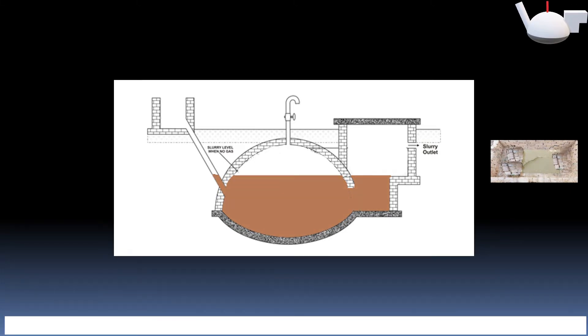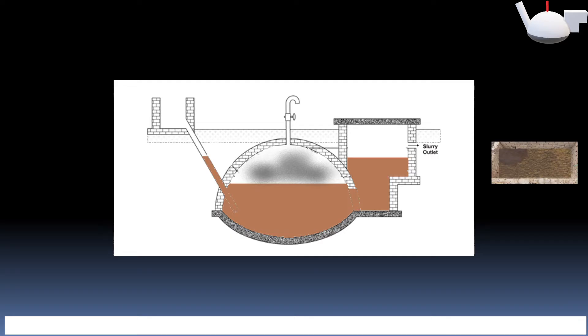After few days, gas will start forming. As the gas generates and accumulates in empty portion of the dome of the biogas plant, it presses down the slurry of the digester and displaces it into the outlet tank. The slurry level in the digester falls whereas in the outlet tank it starts rising with the formation of gas.